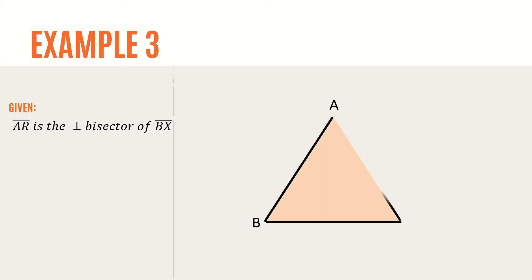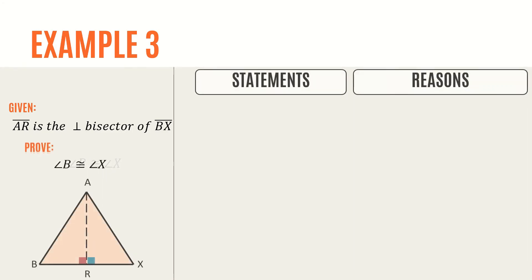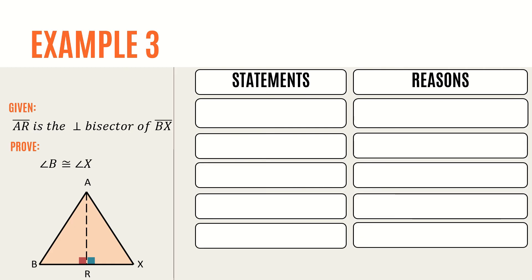For this example, we have triangle ABX. Side AR is the perpendicular bisector of side BX. A perpendicular bisector is a line that bisects another line and creates two right angles. We will prove that angles B and X are congruent using the two-column proof. We must first draw a table with two columns — statements on the first column, reasons on the second. We start proving by stating the given: side AR is the perpendicular bisector of side BX. The reason is given.